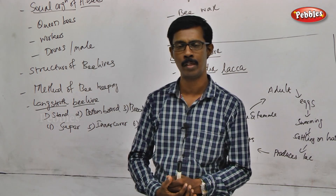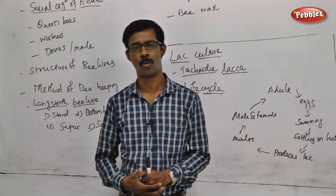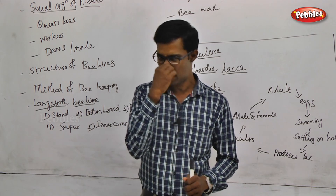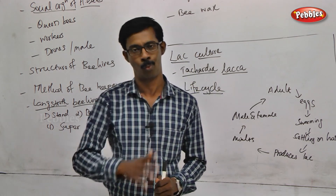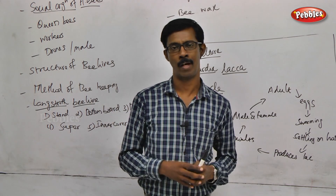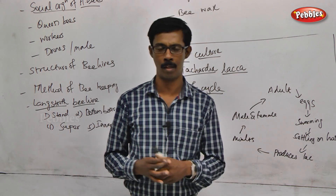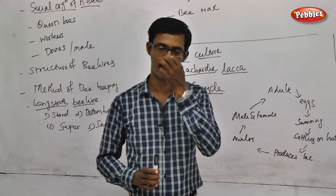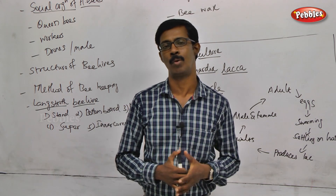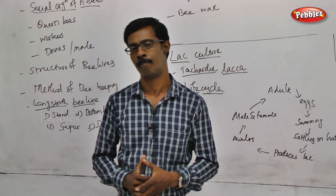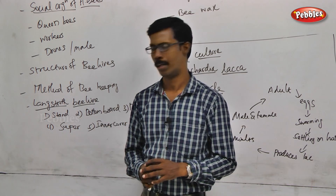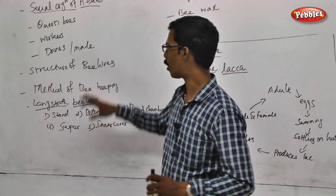The third type is the drone, which is the male bee. There are too many drones during mating season. Drones do not collect honey. Once mating is done, if there are too many males, they are driven out of the hive.